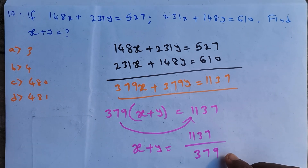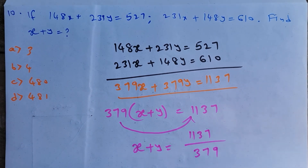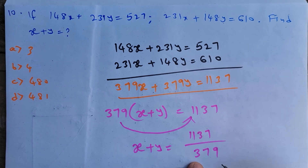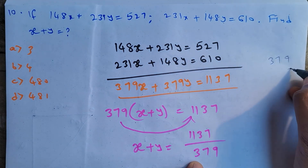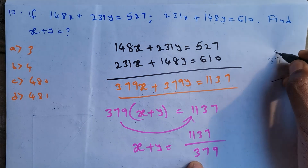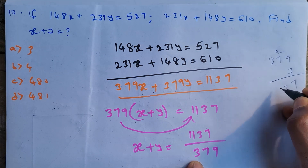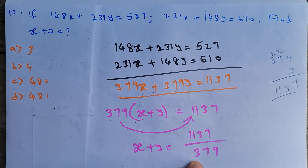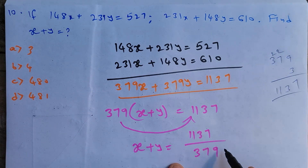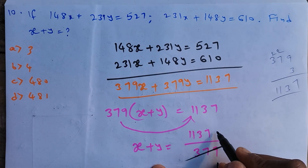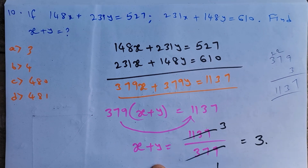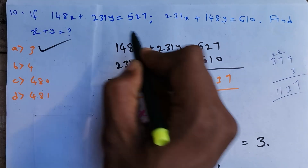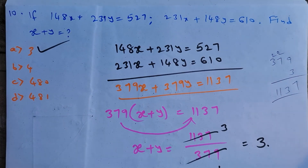Dividing both sides by 379: X + Y = 1137 ÷ 379 = 3. So X + Y = 3, and option A is the correct option.